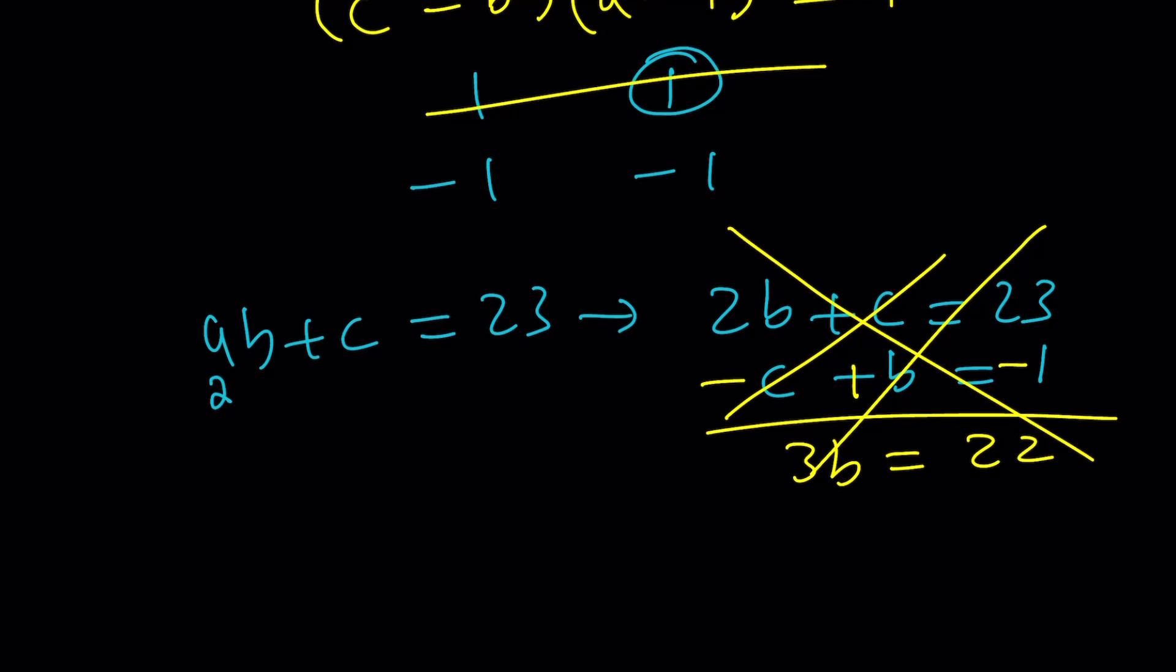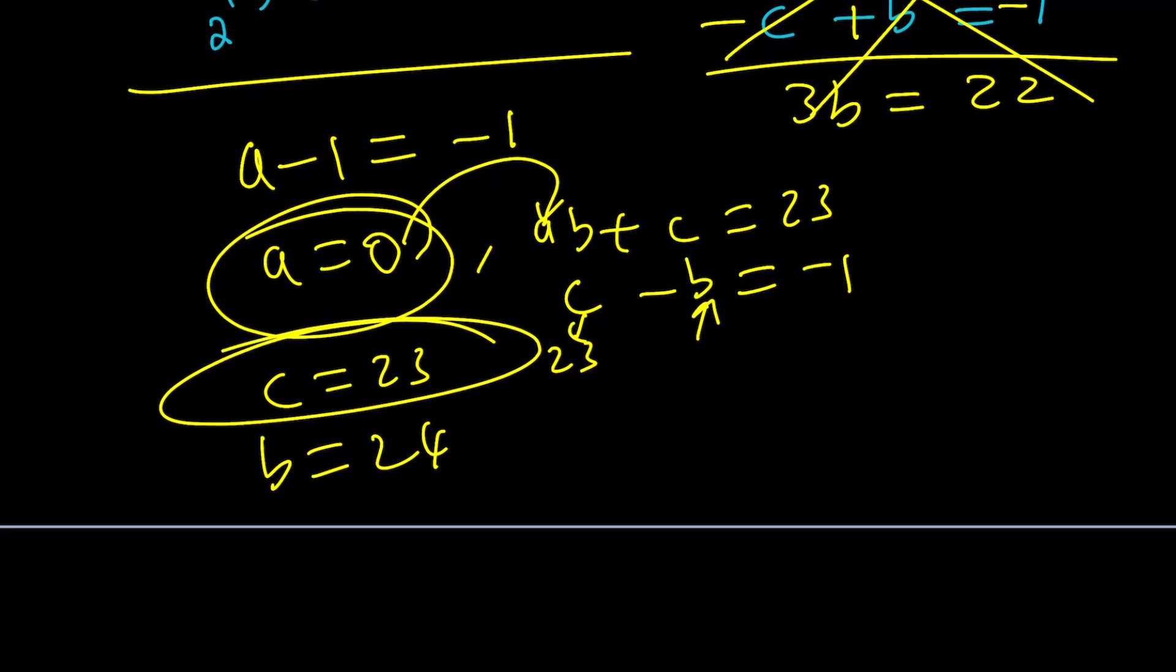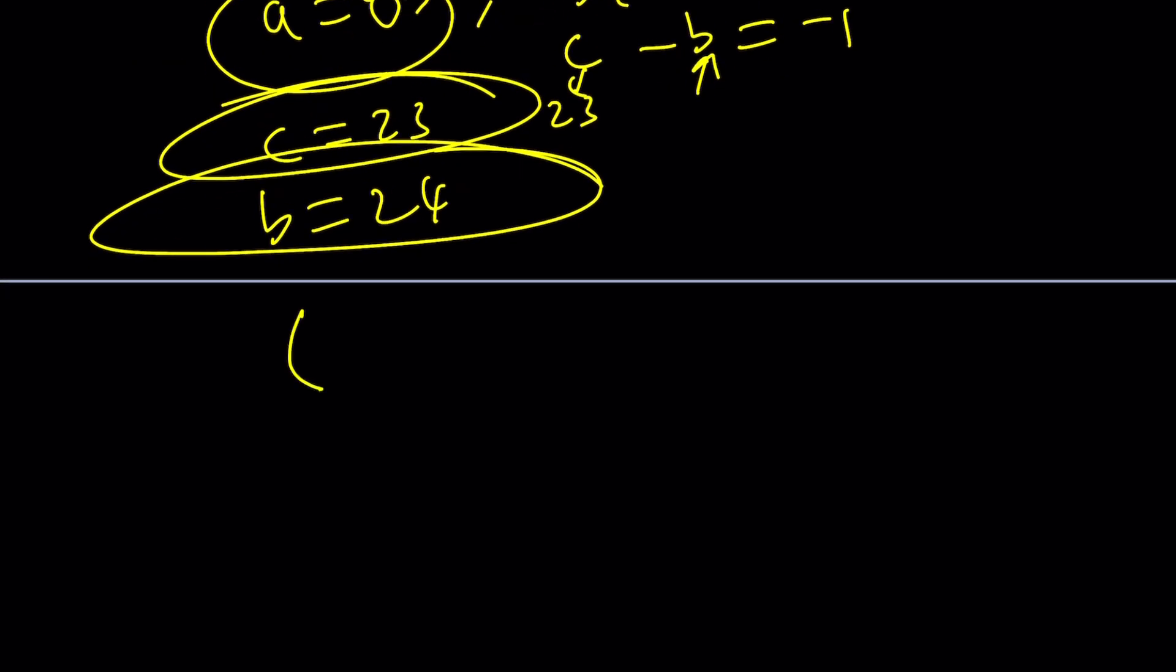Let's look at the second case. Second case is A minus one equals negative one, which means A is equal to zero. And we have AB plus C equals 23. And C minus B equals negative one. So that's the system we have. We kind of have like three equations, but A equals zero is pretty easy to use. So if you plug in zero here, you're going to get C equals 23. If you plug in 23, you're going to get B equals 24. And guess what? That's going to be the only solution. Again, zero comma 24 comma 23 is the only solution to this Diophantine system.